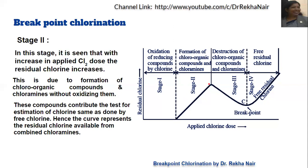However, it is not true residual chlorine that is increasing. The actual increase is in the amount of chloro-organic compounds and chloramines being formed, and because these compounds test similarly to chlorine, we assume residual chlorine is increasing. But in reality, Stage 2 is characterized by the formation of chloro-organic compounds and chloramines — not free chlorine.